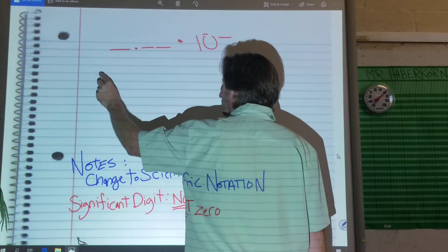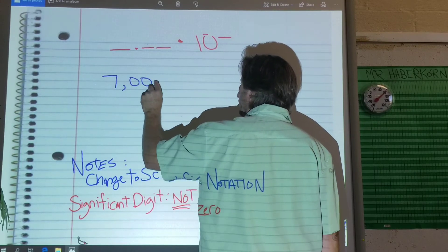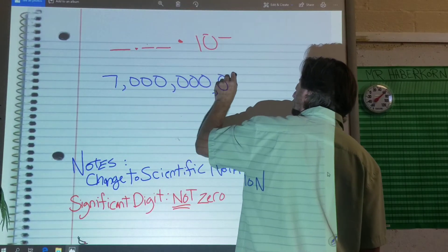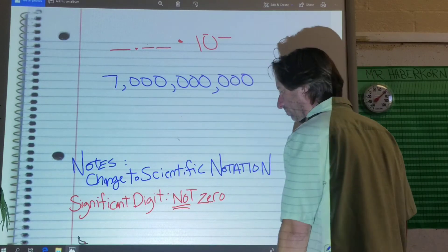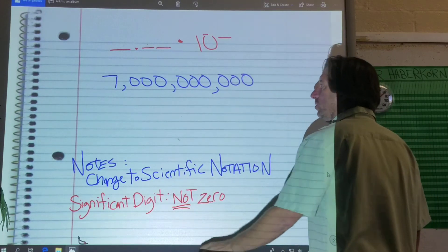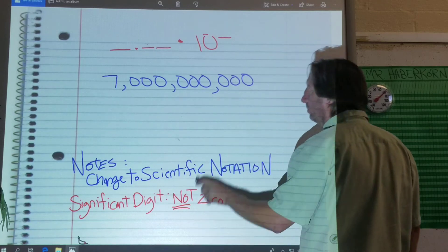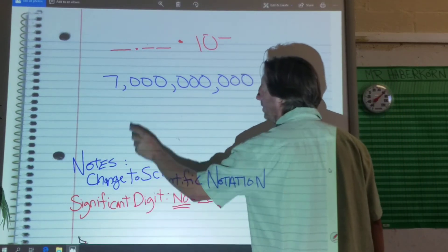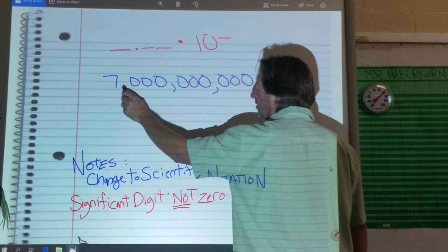Let's do 7 billion. There's a million. There's a billion. There we go. So our point is hiding here at the end. You don't see it, but it's there. We want to move it here, right? After the first significant digit.